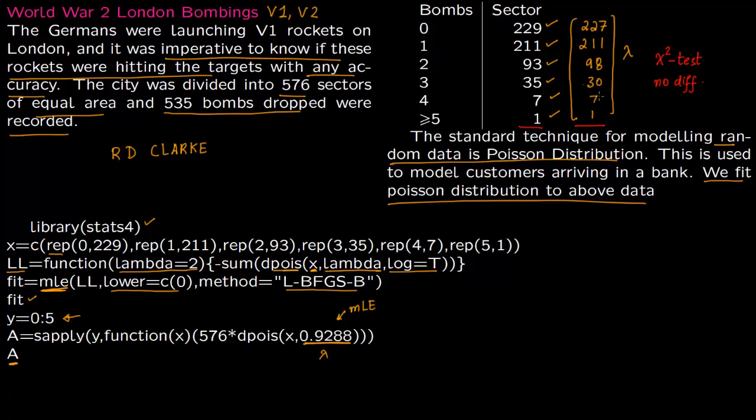This was important because this saved a lot of resources. Otherwise all the factories and the bunkers would have to be relocated. Since R.D. Clark found out that the rockets did not have any accuracy, it saved a lot of resources in the war.